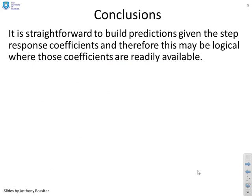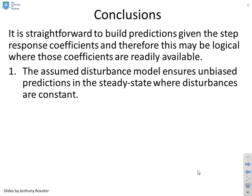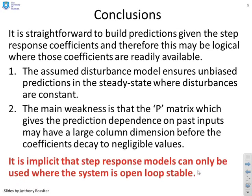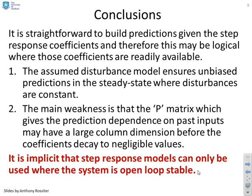So in conclusions, it's straightforward to build predictions given the step response coefficients. And therefore, this may be logical where those coefficients are readily available. And clearly, you'll get unbiased predictions in this case because we've essentially based it on the CARIMA model. The main weakness of this method is the P matrix, which gives the dependence on past inputs, may have a very large column dimension before the coefficients decay to negligible values. So there's a lot more parameters to carry around, a lot more matrix multiplication. But the definition of the actual prediction matrices is by inspection. There's no computation at all, really, apart from a few subtractions. As a warning, it's implicit that step response models can only be used where the system is open loop stable.